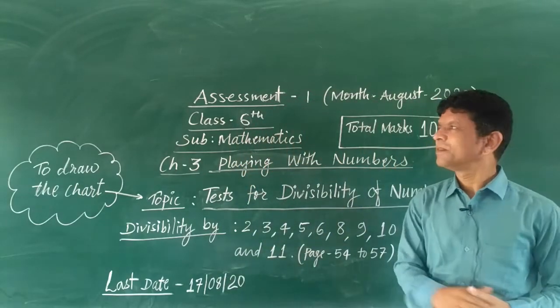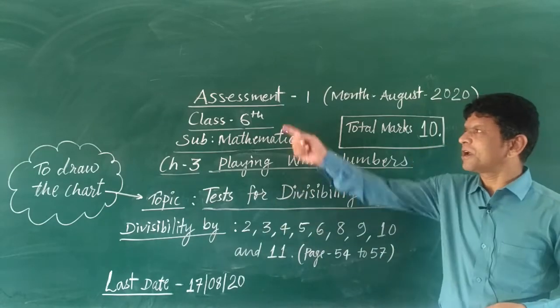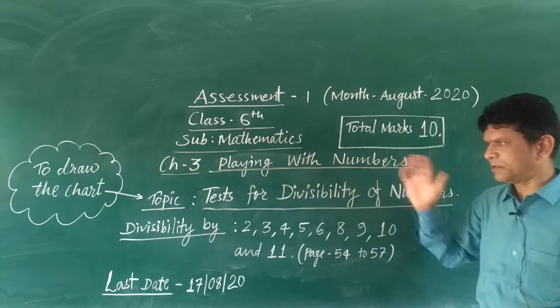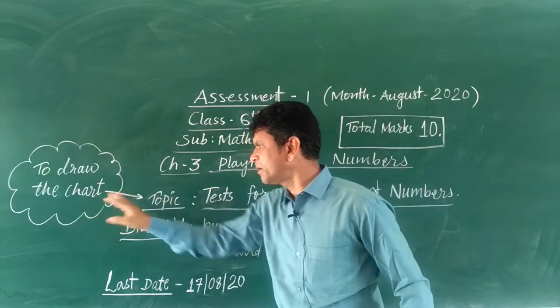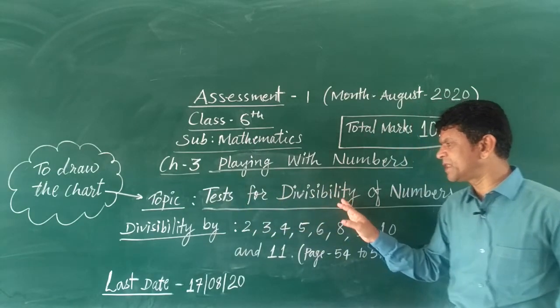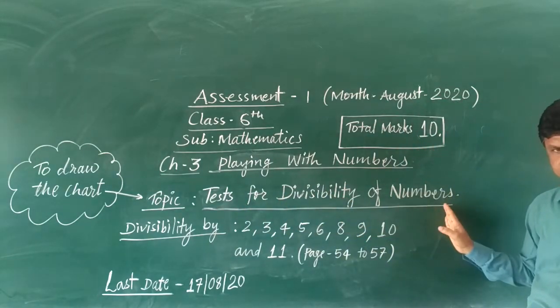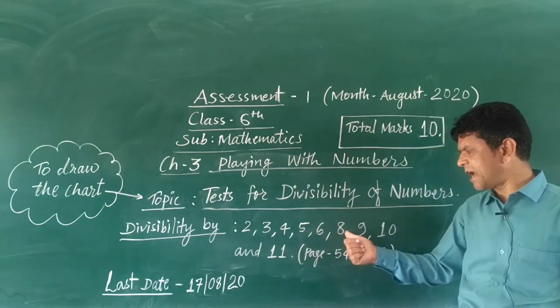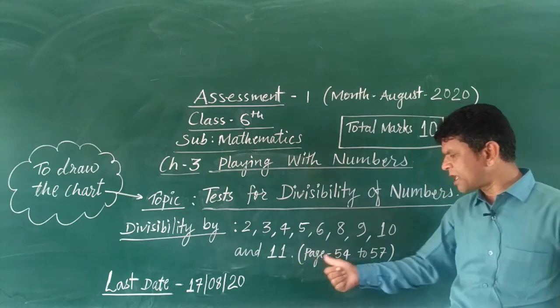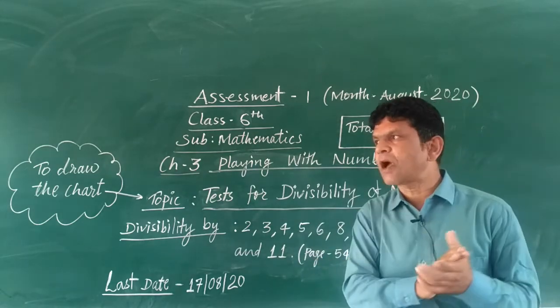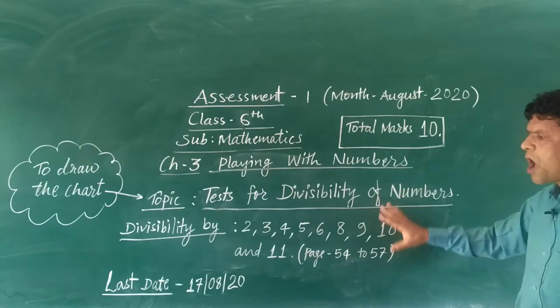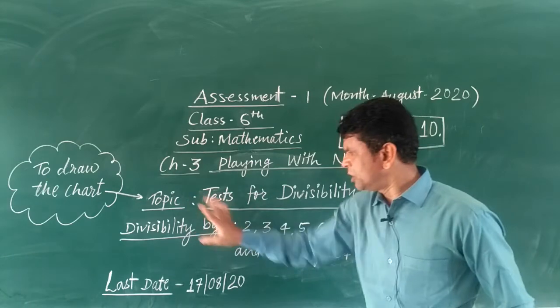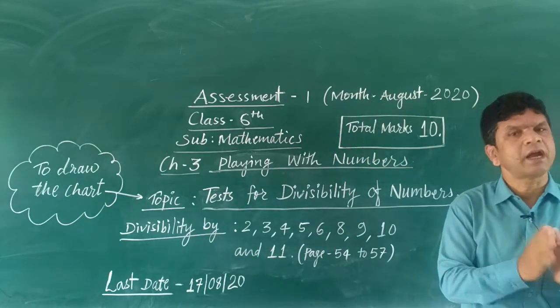Good morning everyone. This video is for your assessment first, Chapter 3: Playing with Numbers. You have to draw the chart. The topic is tests for divisibility of numbers - divisibility by 2, 3, 4, 5, 6, 8, 9, 10, and 11, pages 54 to 57. You have to learn all the divisibility rules and this chart you have to submit at the school.